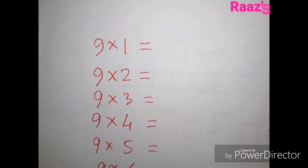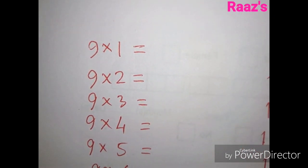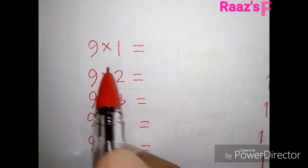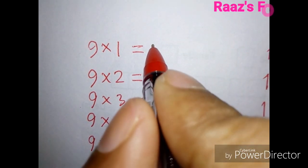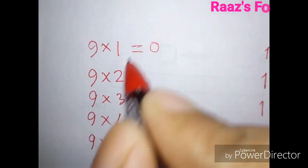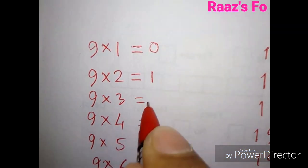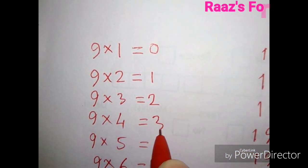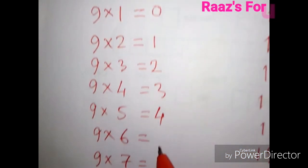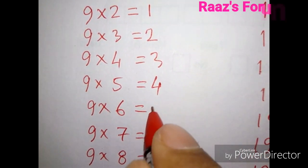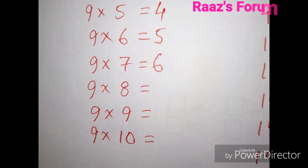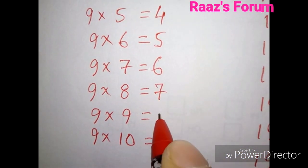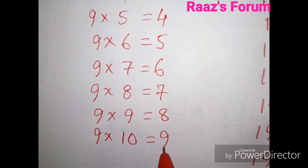Let's start from the table of 9. Here I have already written 9×1, 9×2, and so on. First, write here 0, next is 1, next is 2, 3, 4, 5, 6, 7, 8, and 9.